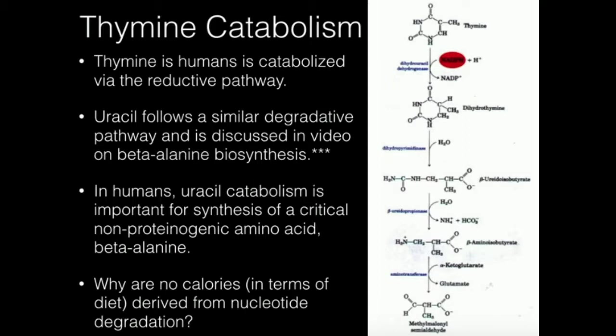That's going to give us this molecule called beta-aminoisobutyrate. The reason you have to have an extra enzyme in thymine catabolism — which is just a transaminase — is because of this methyl group. This methyl group is the one that differentiates thymine from uracil. If you did not have that methyl group there, you could imagine that once you get down to this point, that methyl group would also not be there.